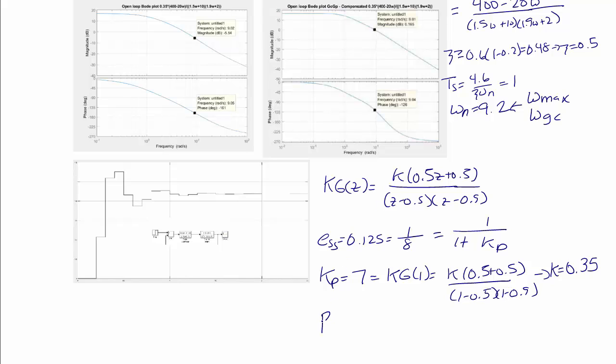The phase margin is equal to 90 minus the arctangent of the quantity, the square root of negative 2 zeta squared plus the square root of 1 plus 4 zeta to the fourth over 2 zeta, and that equals 51 degrees.